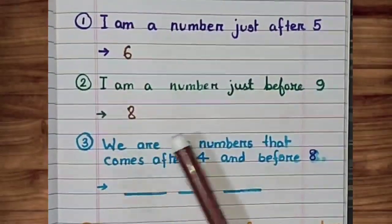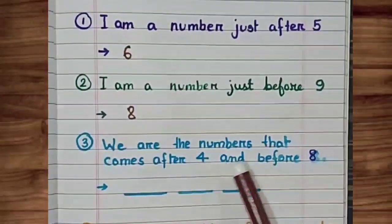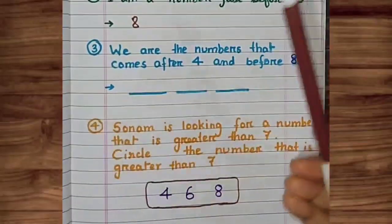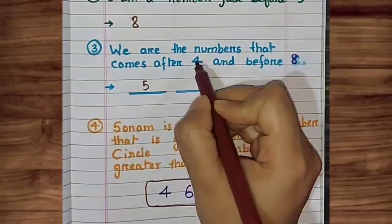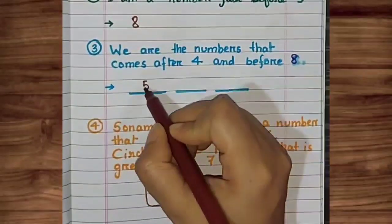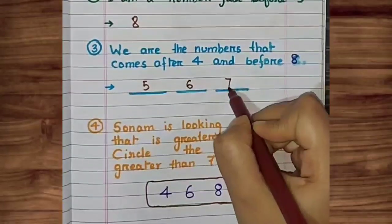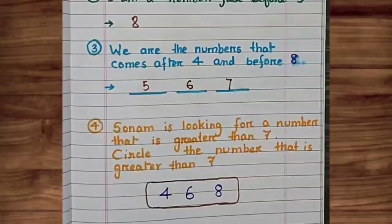We are the number that comes after 4 and before 8. Number 4 ke baad kaunsa number aata hai? 5, 6, 7, 8. But here what is written? Before 8. That means 8 nahi hoga. So 5, 6, and 7.